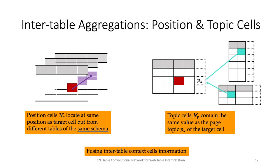Besides value cells, we can also obtain inter-table contextual information from two other types of cells: position cells and topic cells. In the left figure, position cells highlighted in purple have the same column and row index position as the target cell but are located in different tables of the same schema — the same set of headers as the target table. In the right figure, topic cells contain the page topic entity of the target table. Like the inter-table aggregation on value cells, we first apply intra-table aggregation on each of these position and topic cells, then obtain the position cells aggregated embedding and the topic cells aggregated embedding using self-attention. Although the calculations are similar for these three inter-table aggregation modules, the different nature of the three types of inter-table cells provides valuable contextual information from different aspects.